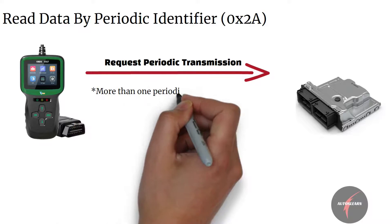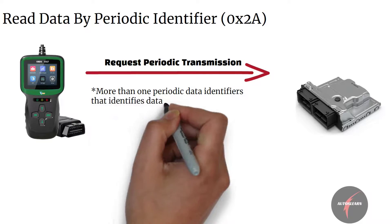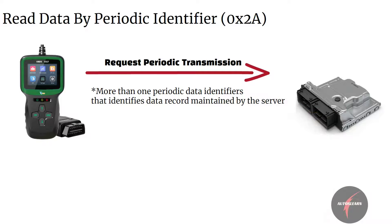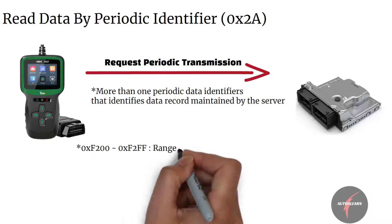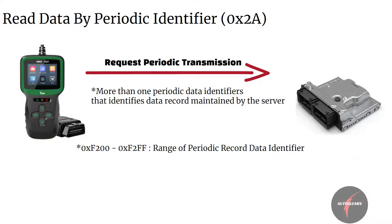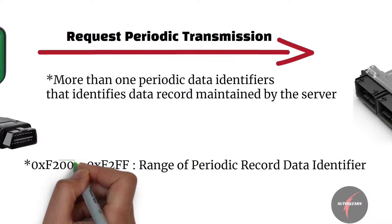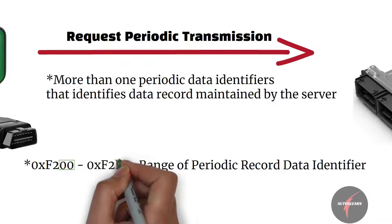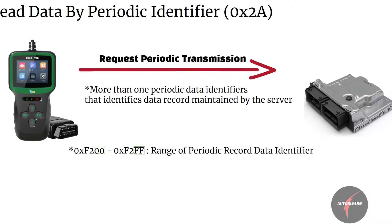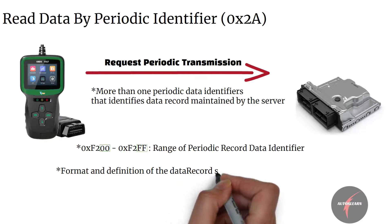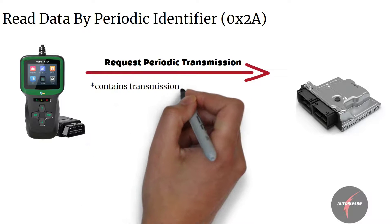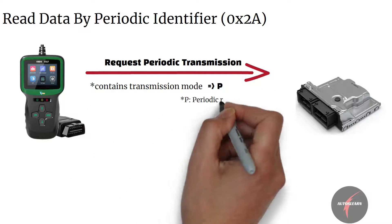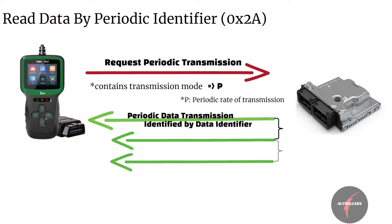The client request message can contain more than one periodic data identifier that defines the data record maintained by the server. The hex value range 0xF200 to 0xF2FF is reserved for periodic record data identifiers, and the periodic data identifier in the request is defined by the lowest byte of the periodic record data identifier. The format and definition of the data record shall be vehicle manufacturer specific. The request shall contain a transmission mode, which defines the periodic transmission rate of the message — that is, the time between any two consecutive response messages for the same periodic data identifier.